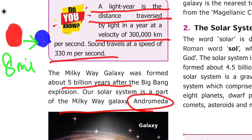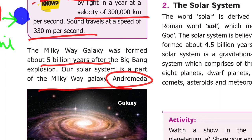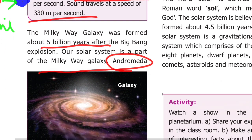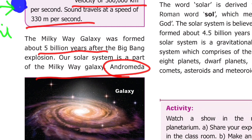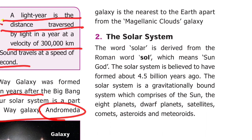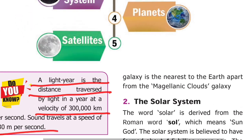For example, sunlight reaches the Earth in 8 minutes. The Milky Way Galaxy was formed about 5 billion years after the Big Bang explosion. Our solar system is part of the Milky Way galaxy. The Andromeda galaxy is the nearest galaxy to the Earth, apart from the Magellanic Clouds.